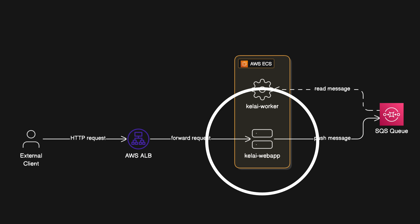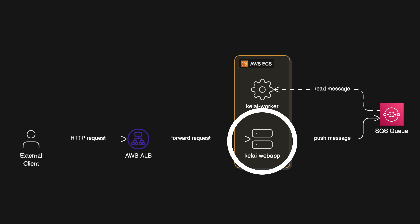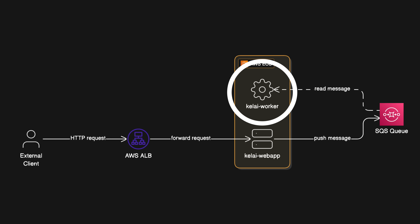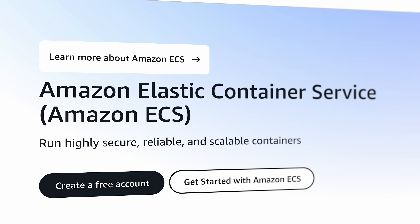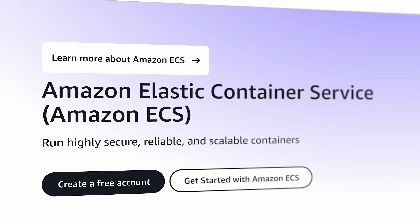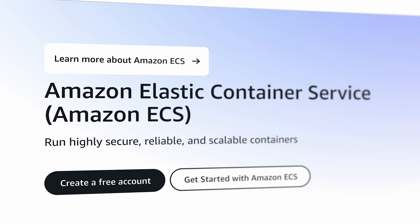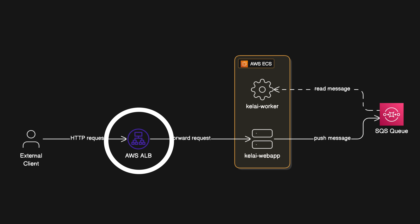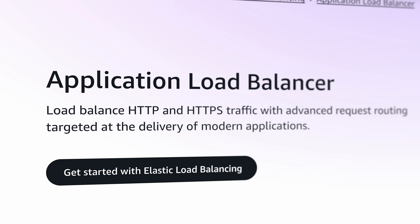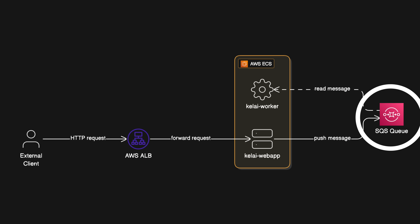The application has two main components. One is the web application, which is what users interact with through the browser or on their mobile device. The other is a worker node that pulls messages off of a queue, does some computation, and then writes the result to the database. I use AWS ECS, Elastic Container Service, to host both those worker nodes and the web application. The ECS containers for the web app are behind an ALB, an application load balancer, which accepts user traffic and distributes it equally across all the web app nodes. I use AWS SQS to manage the queue that the worker nodes pull from — the web app pushes a message to the queue, worker nodes pull it off, do the work, and write it to the database.